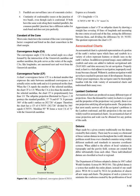Lambert conformal aeronautical charts are produced on many different types of projections. Since the demand for variety is great and the properties of projections vary greatly, there is no one projection satisfying all navigation needs. The projection that most nearly answers all of the navigator's problems is the Lambert conformal, and this projection is the one most widely used for aeronautical charts. An aeronautical chart of some projection and scale can be obtained for any portion of the Earth.